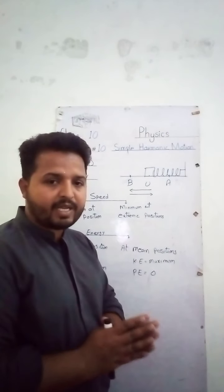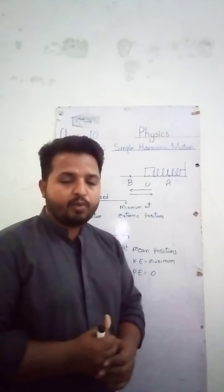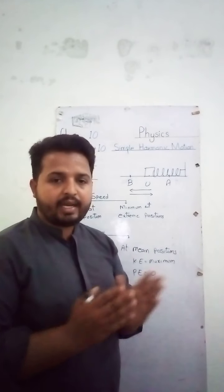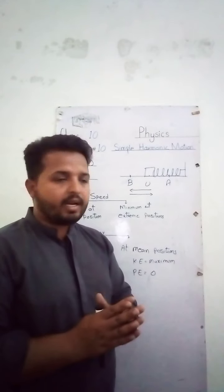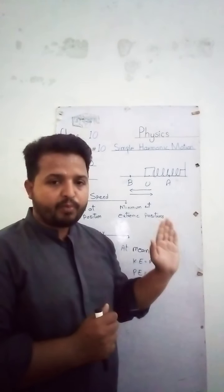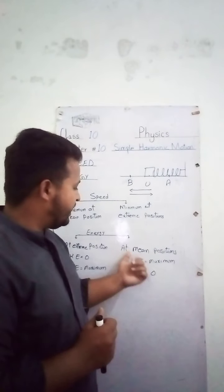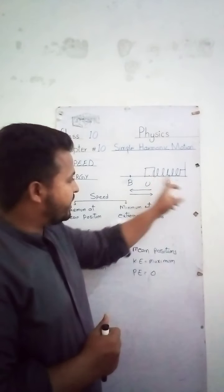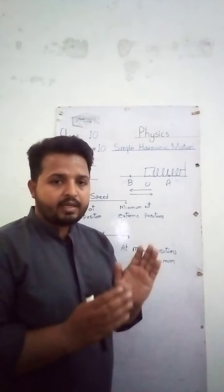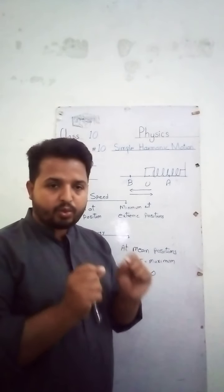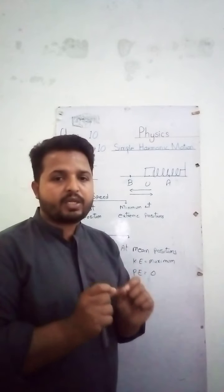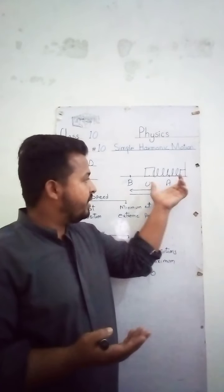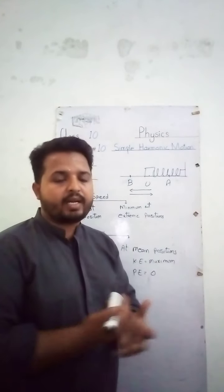At extreme positions, the energy is totally potential energy — potential energy is maximum. Kinetic energy is due to motion, and at extreme positions the body momentarily comes to rest, so it does not move. Therefore, kinetic energy becomes zero. At both extreme positions, the spring is in stretched or compressed form, so the energy is potential energy, and kinetic energy is zero.